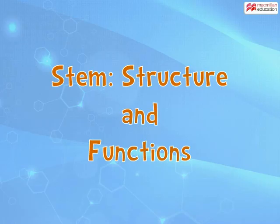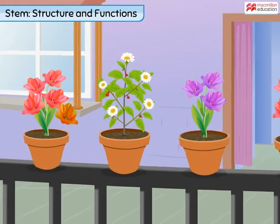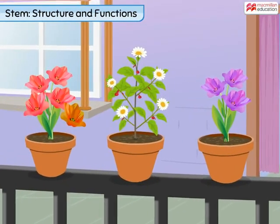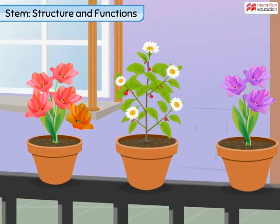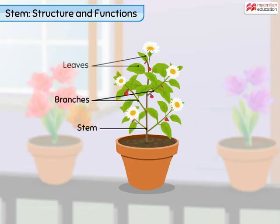Stem structure and functions. The stem is the part of the plant that is mostly found above the ground. It forms the support system of the plant along with roots. It also bears the branches, leaves, flowers, and fruits. But is that all we need to know about stems? Certainly not.